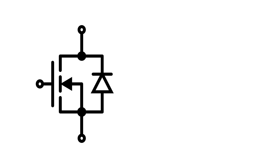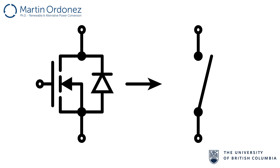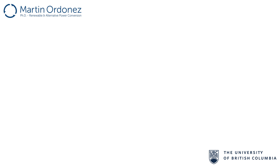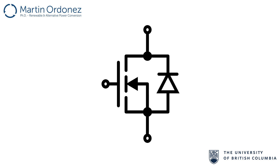As most of you already know, MOSFETs are devices which act as switches, allowing current to flow when closed and blocking voltages and not allowing the flow of current when open. A MOSFET has three terminals: gate, drain, and source.